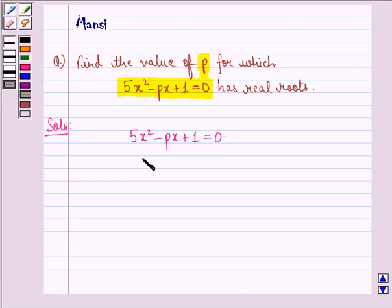When we compare it to the equation ax² + bx + c = 0, we get a as 5, b is -p, and c is equal to 1.